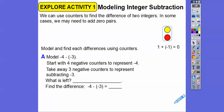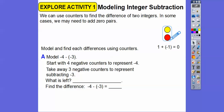Now we're going to be subtracting integers that are different signs or the same sign. Those two were examples of the same sign. Here we're going to model and find each difference using counters. Sometimes we have to use our zero — this is when we add zero pairs. We might be missing positives or negatives and can't take them away yet, so we add in enough zeros to get the counters we need.